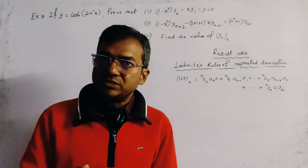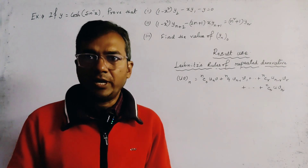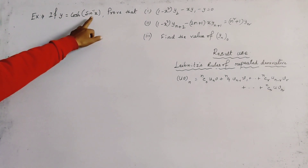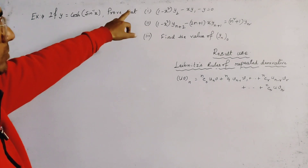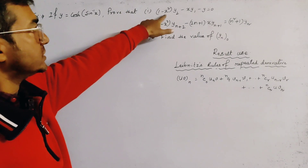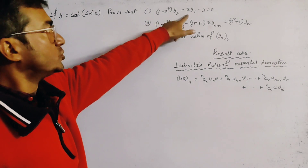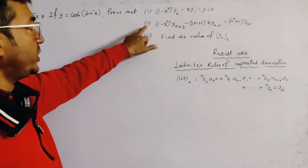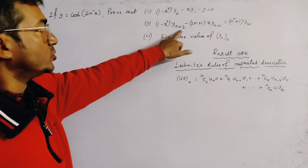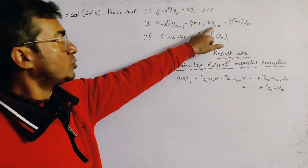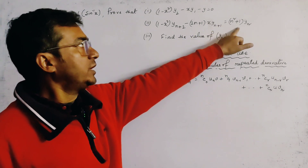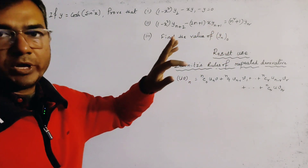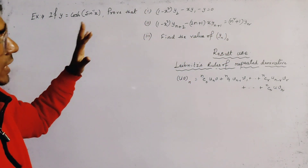Today's problem is from successive differentiation. The problem is: if y equals cos hyperbolic of sine inverse x, prove the following three parts. The first part is (1 minus x squared) into y₂ minus x·y₁ minus y equals 0. The second part is (1 minus x squared)·yₙ₊₂ minus (2n+1)·x·yₙ₊₁ equals (n squared plus 1)·yₙ. The third part is to find the value of yₙ at 0.